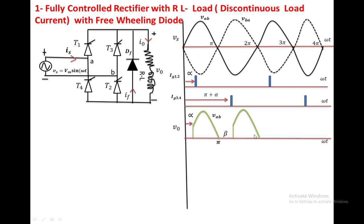T3 and T4 turn off at angle 2pi and DF turns on. The load voltage is zero up to angle beta, at which point the current reaches zero and DF turns off. From 2pi plus beta to 2pi plus alpha, no device is conducting and the output voltage is zero. At 3pi plus alpha, the triggering is again applied to T1 and T2, producing the VAB voltage again, followed by VBA voltage.